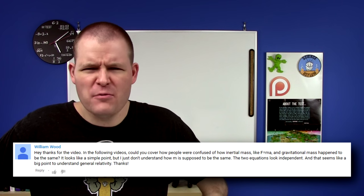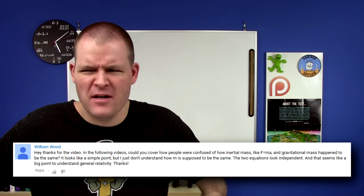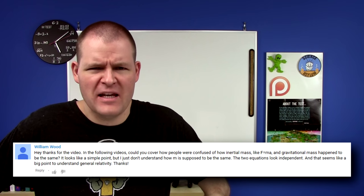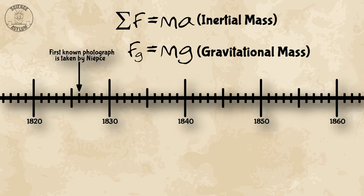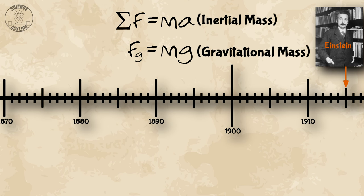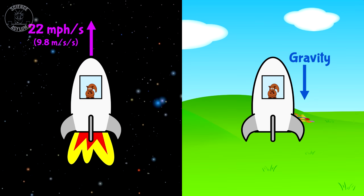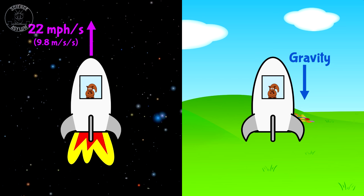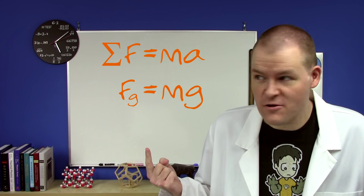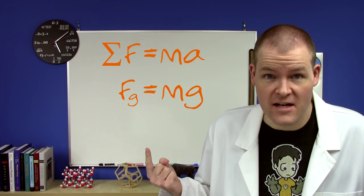How are inertial mass and gravitational mass the same? It seems like they're completely independent. They were seen as independent for a very long time — in fact, Newton had no idea why they were always the same. It took general relativity in 1915 to finally understand. The equivalence principle says acceleration and gravity are the same thing, so these two equations are basically saying the same thing.